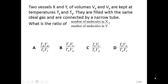Two vessels X and Y of volumes VX and VY are kept at temperatures TX and TY. They are filled with the same ideal gas and are connected by a narrow tube. What is the ratio of the number of molecules in X to the number of molecules in Y?